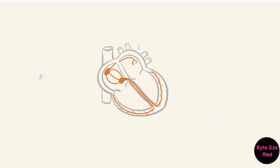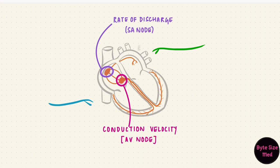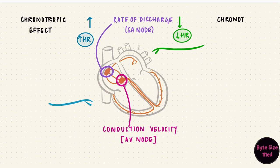The heart can do this on its own, but it is supplied by autonomic nerves which can modulate what happens — such as changing the rate of discharge from the sinoatrial node or changing the conduction velocity through the AV node. If the rate of discharge from the SA node increases, there are more action potentials per unit time, meaning a faster heart rate; if it decreases, the heart rate is lower. This effect on heart rate is called the chronotropic effect.